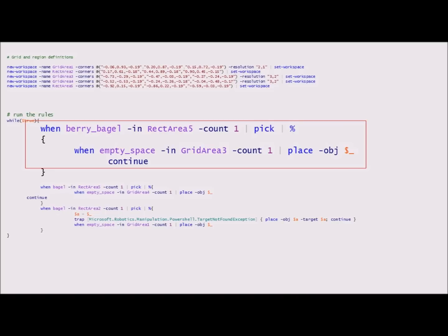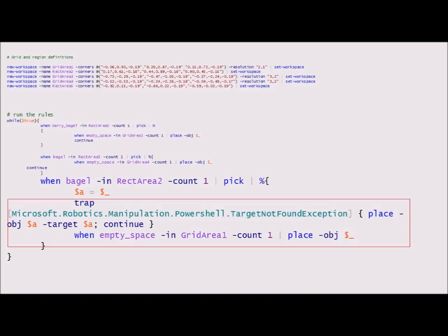Unoccupied cells are determined by running a test of all currently detected bagels in the scene against the geometry of the grid cells. Failures are handled using PowerShell's exception handling.